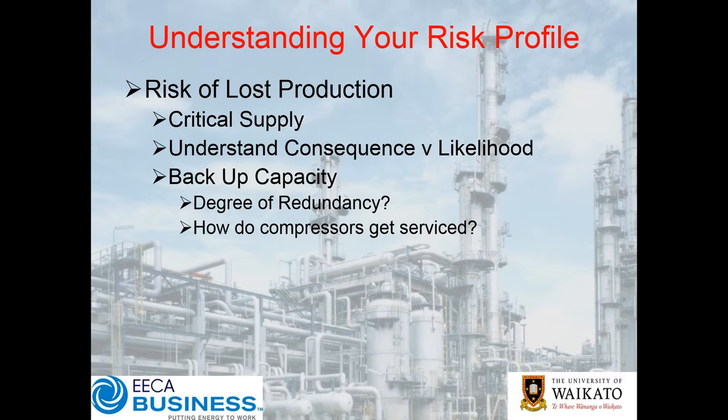If we have three compressors on our site and we use all three of them, if we can still get through on critical systems with two — if we lose one — that might be tolerable. We might be able to isolate and shut down part of our operation temporarily to get a fix. Or do we need to have one machine as backup to allow for one extra machine going down?